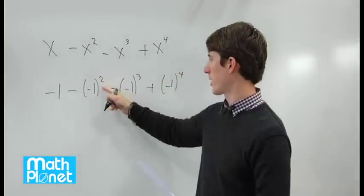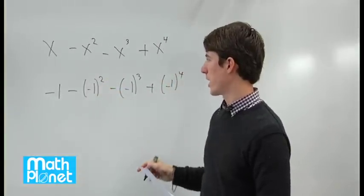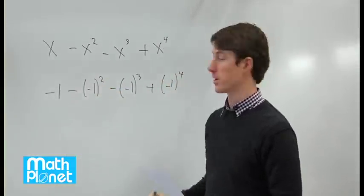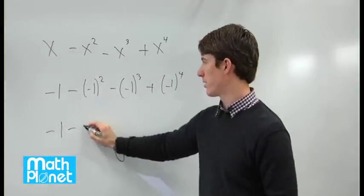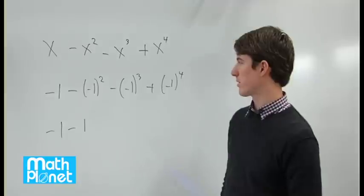So this, we can evaluate each of these individually and then add separately. Negative one, and then we have minus negative one times negative one is a positive number, so we get just positive one.